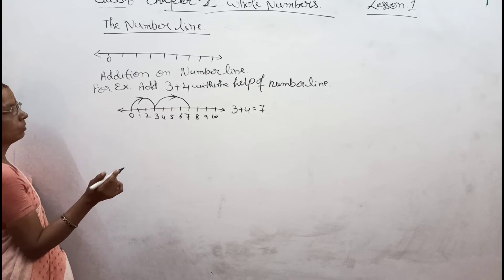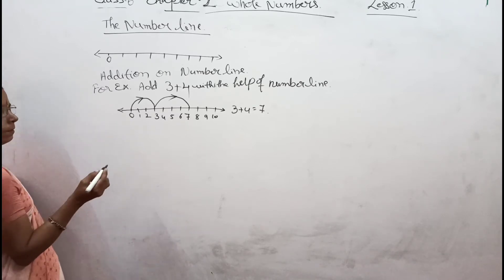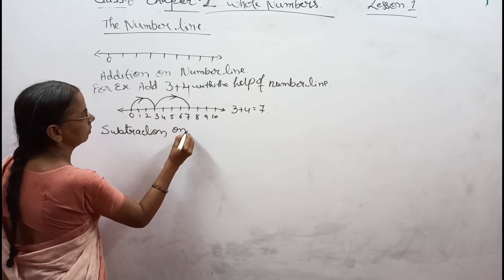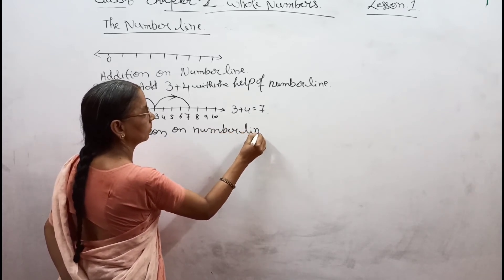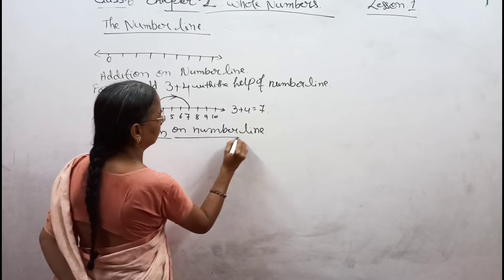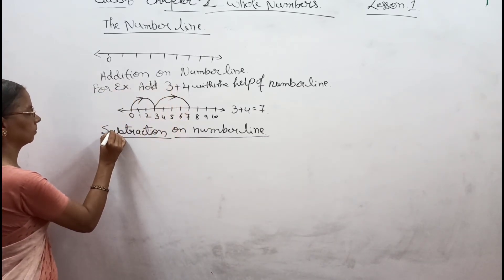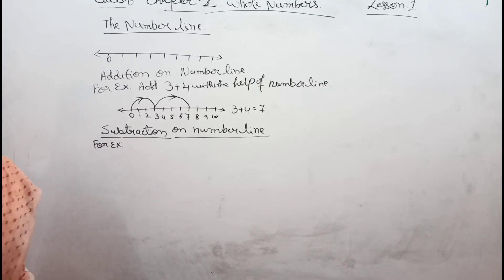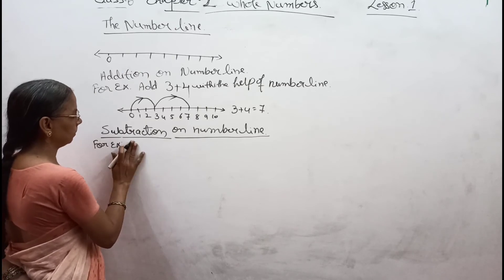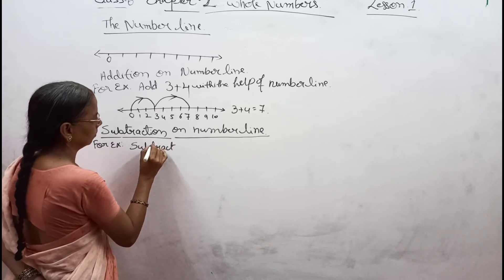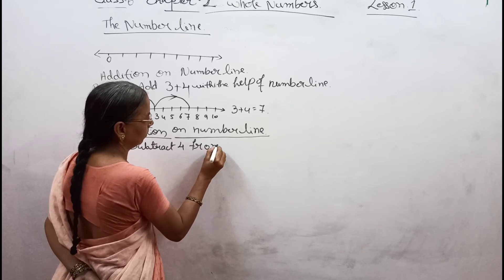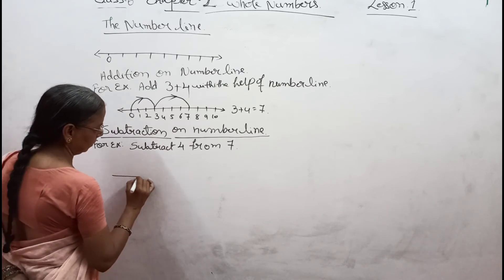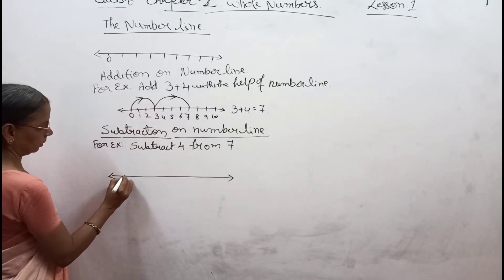In the same way, we have to do subtraction on a number line. For example, subtract 4 from 7. Again, we have to draw a number line starting from 0.